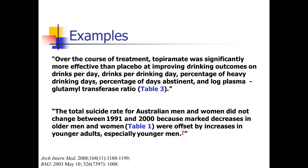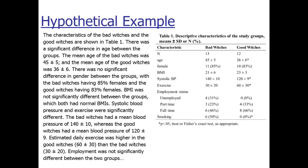Now let's look at what not to do. Consider a hypothetical study comparing bad witches and good witches. A typical poor results section might start: 'The characteristics of the bad witches and the good witches are shown in table one' — notice the passive voice; you should at least say 'table one shows the characteristics.' You may not even need to tell the reader what table one does, since that's obvious — just jump right into the findings and put table one in parentheses.